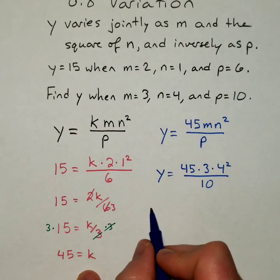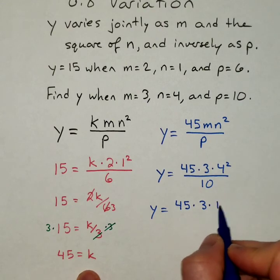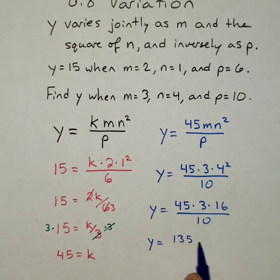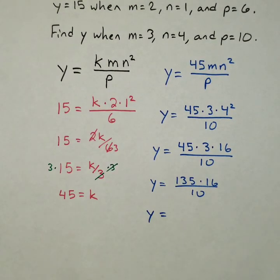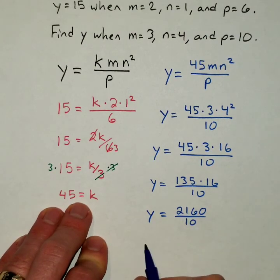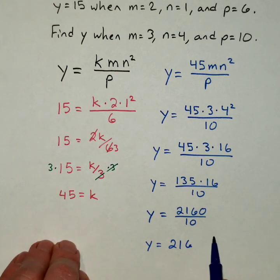45 times 3 times 4 squared all over 10. Got some multiplying to do, right? So we have 45 times 3 times 16 all over 10. 45 times 3 should be 135 times 16 over 10. And if I finish that off, 135 times 16 is 2,160 over 10. So you divide that out and you get 216 as a final answer.